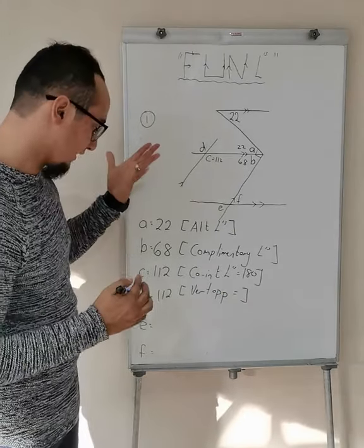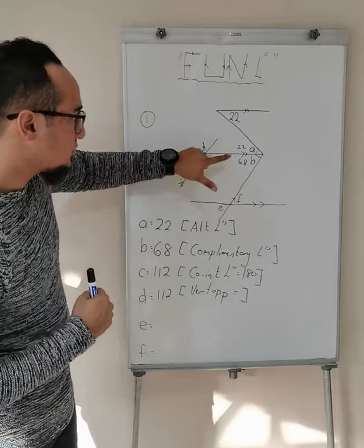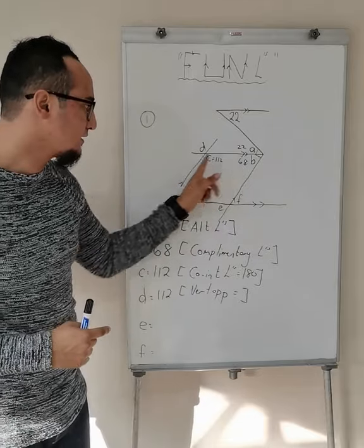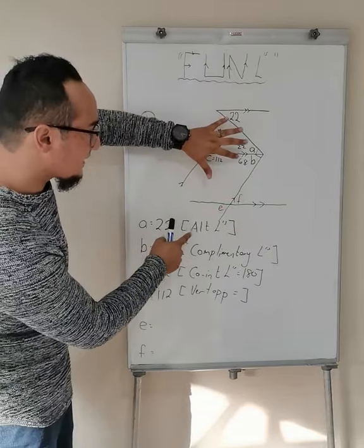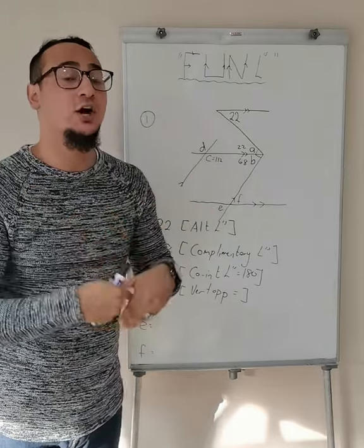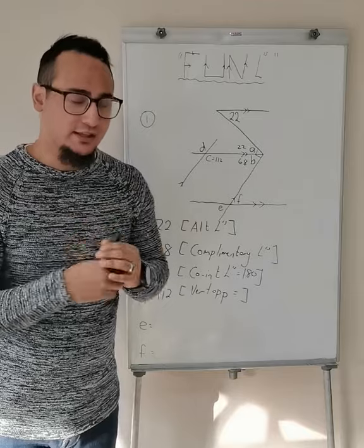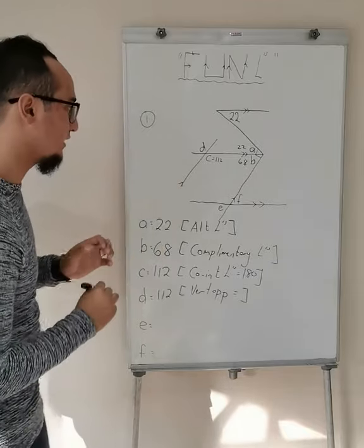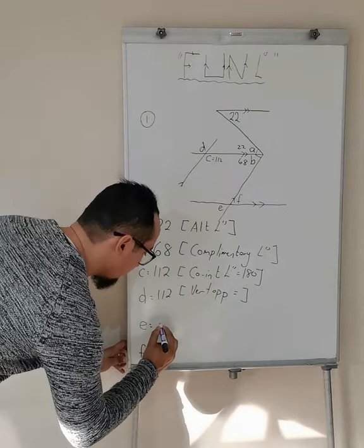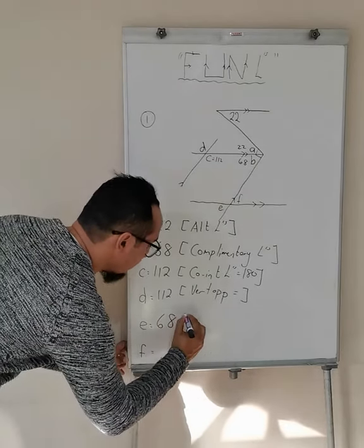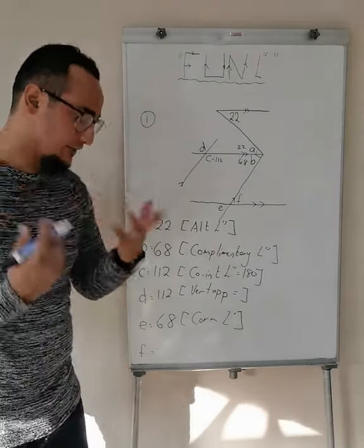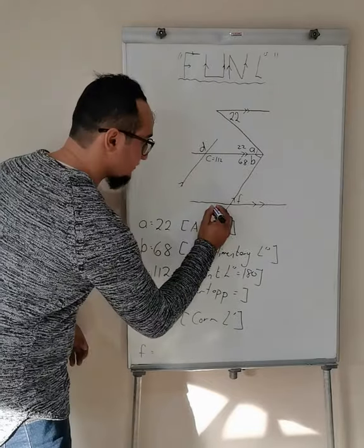Let's go over now to E. Notice these lines over there — they are parallel to one another. And what letter do I see? That's my transversal. I notice that B and E, they are corresponding to one another. Corresponding angles are equal to each other. So E would be corresponding to B, therefore E is equal to 68 degrees. Corresponding angles are equal. Write it down: 68.